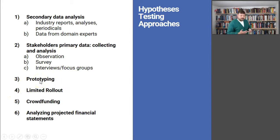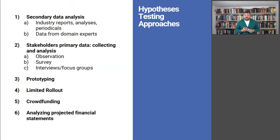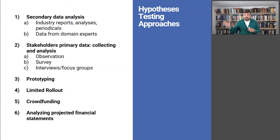Third is prototyping — the way to test the technical feasibility of your solution, and one of the best ways to convey what you're doing to stakeholders for your surveys, interviews, and focus groups. Fourth, limited rollout or pilot launch — one of the most certain ways to test that your business model works. For example, if you're starting something across the whole United States, you can launch a pilot in Massachusetts or Arizona, see how it works, and get all the numbers you need — cost of customer acquisition, customer lifetime value, R&D time and costs.